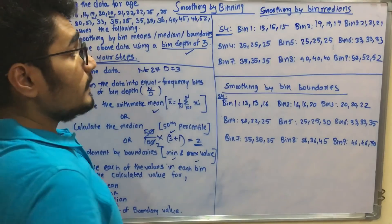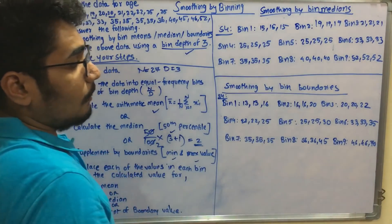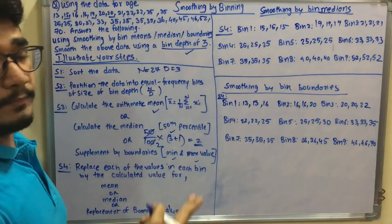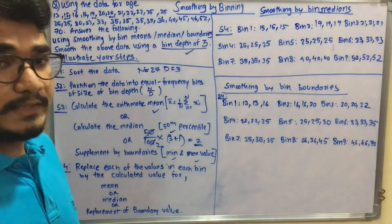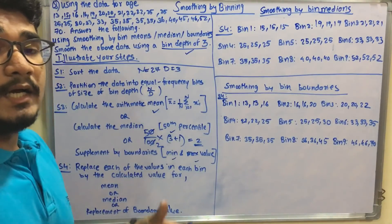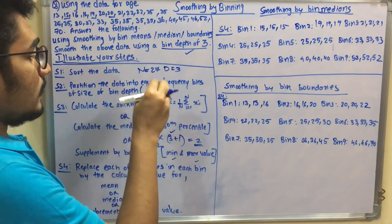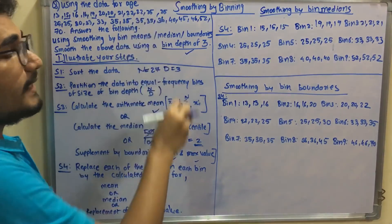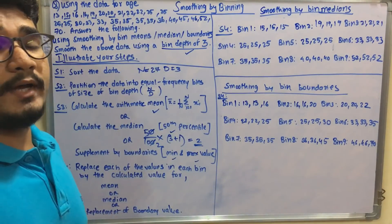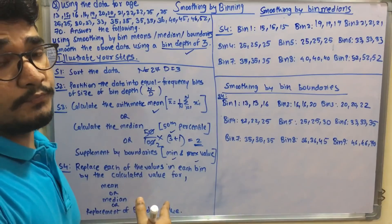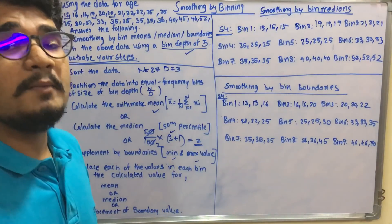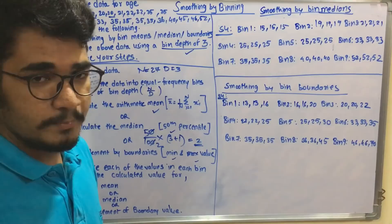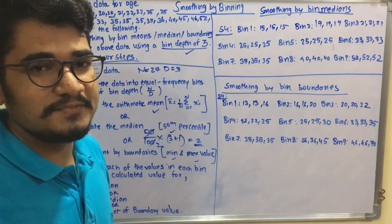That completes smoothing by bin boundaries. In this problem we covered the smoothing by binning technique for handling noisy data using all three methods: bin means, bin median, and bin boundaries. Hope you enjoyed this video — if you found it educational, please like, share, comment, and subscribe to the channel.